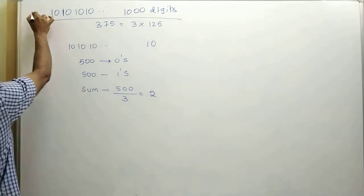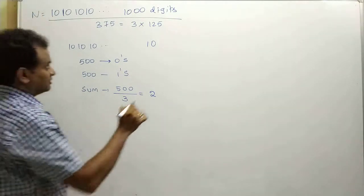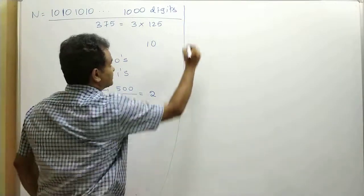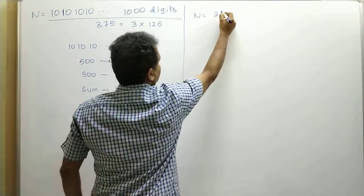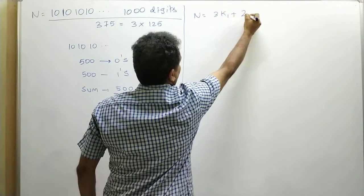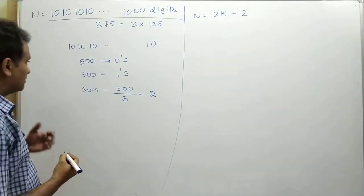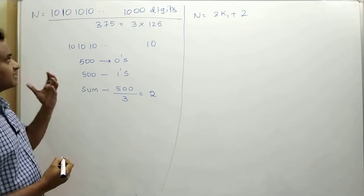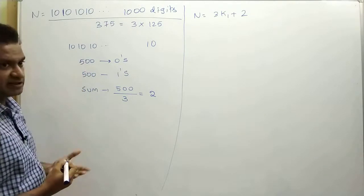Let us assume that the given number is n, then n can be written as 3k₁ plus 2. Now we also find the remainder when the given expression is divisible by 125.